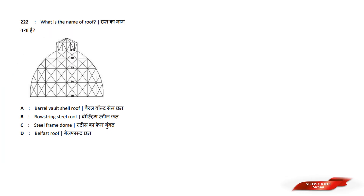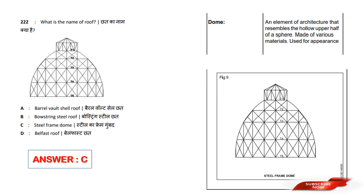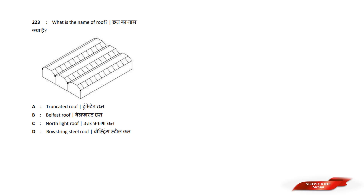What is the name of this roof? Options are: A) Barrel Vault Shell Roof, B) Bowstring Steel Roof, C) Steel Frame Roof, D) Belfast Roof. Answer option C — Steel Frame Dome. Answer option C.